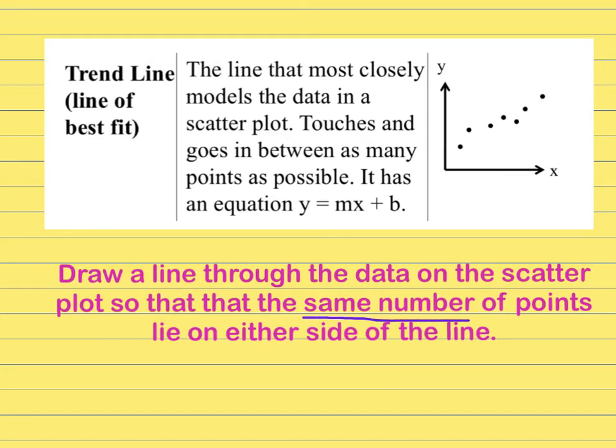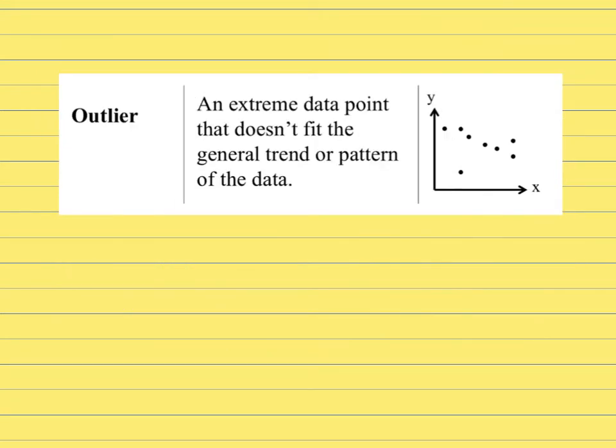We want to have the same number of points on either side of the line when you draw a line, or if you're having to choose between some already made, we want it spaced out evenly. Eventually we can also write an equation for this line, but today we're just going to look at placement.